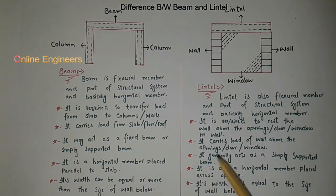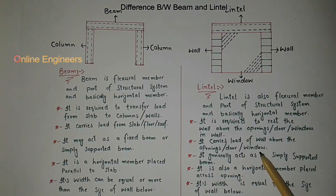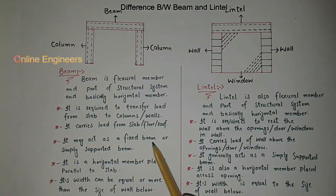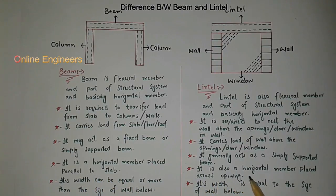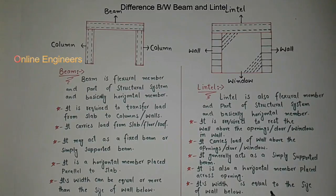A beam carries load from the slab, floor, and roof. A lintel carries the load of the wall above openings like doors and windows. A beam may act as a fixed beam or simply supported beam, while a lintel generally acts as a simply supported beam. A beam is a horizontal member placed parallel to the slab; a lintel is also a horizontal member placed across an opening. A beam's width can be equal to or more than the size of the wall below, whereas a lintel's width is equal to the size of the wall below.